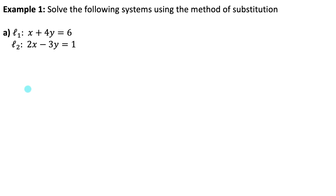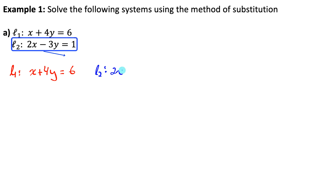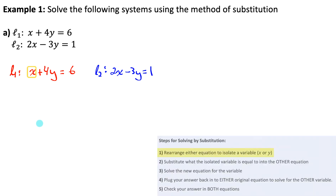When doing substitution, I like to set it up with the equations beside each other — line one and line two. Our goal is to find values of x and y that satisfy both equations. Step one: pick a variable to isolate. I look for one with a coefficient of one — that's easiest to isolate. The x in line one has a coefficient of one, so I'll isolate that by subtracting 4y to the other side: x equals 6 minus 4y. That's step one done.